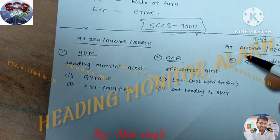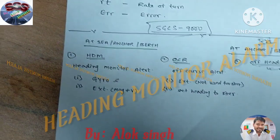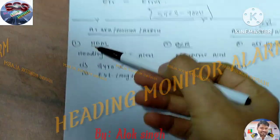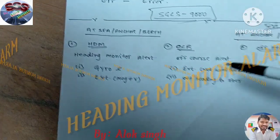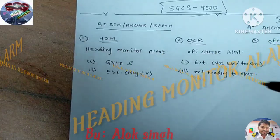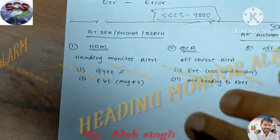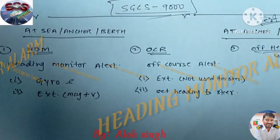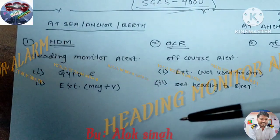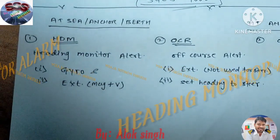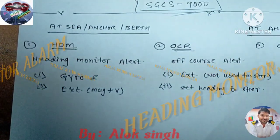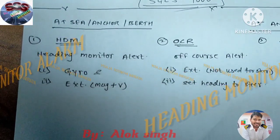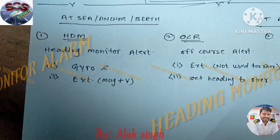We have already seen the off-heading alarm. Now we'll go for the heading monitor alarm. Before we go there, we'll distinguish between what is the gyro and what is external. Some systems have two gyros, but most systems have only one gyro, and the external is like a magnetic compass.